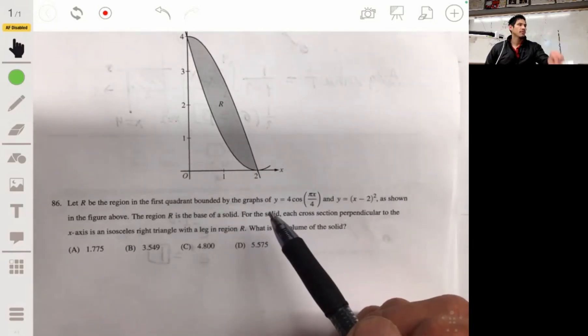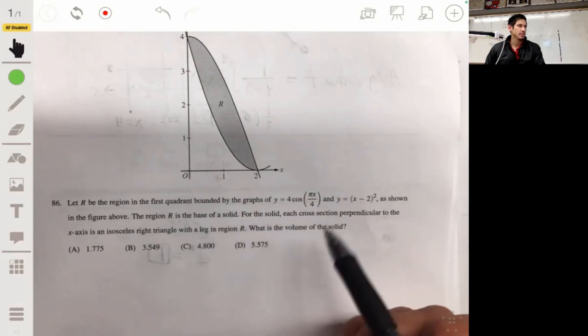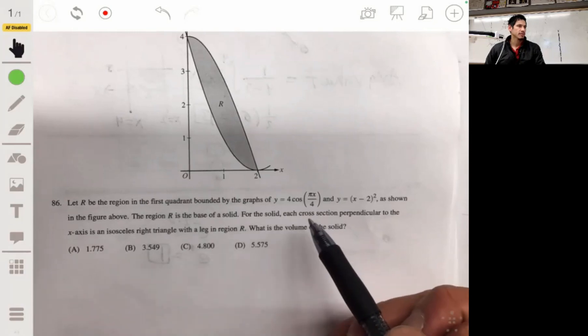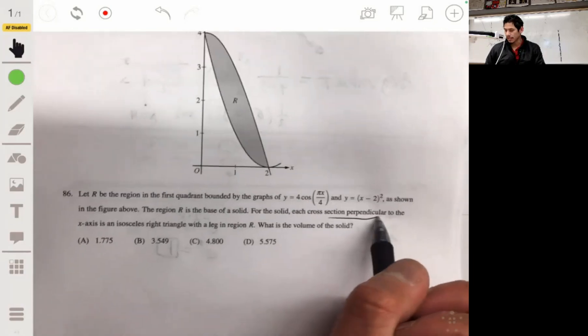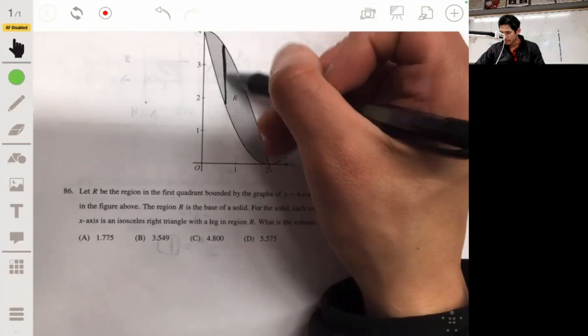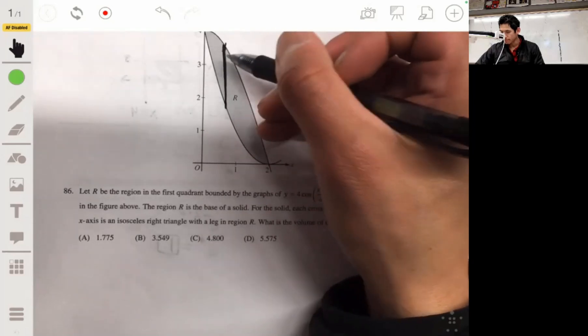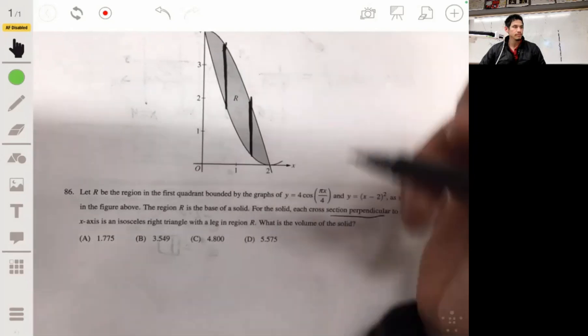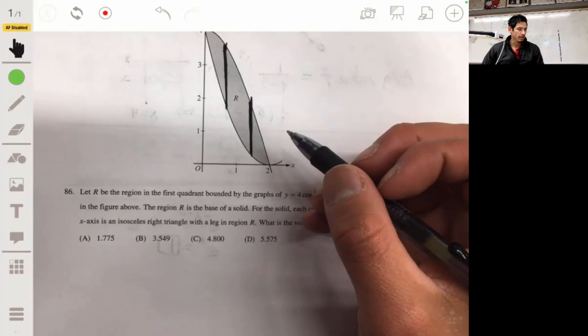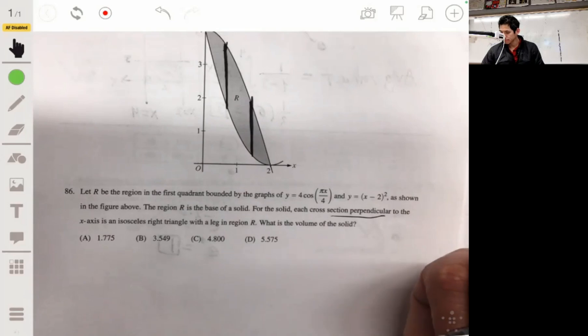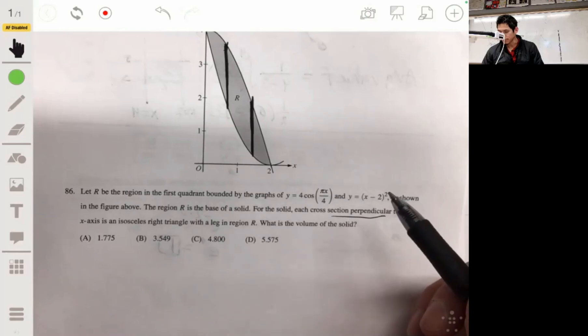For the solid, each cross-section is perpendicular to the x-axis of an isosceles right triangle. Each cross-section is perpendicular to the x-axis, so we're looking at basically lines like that. This will be a cross-section at the end of the cross-section.